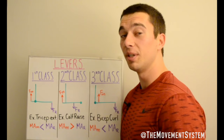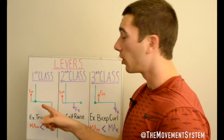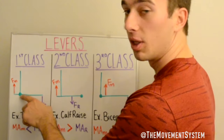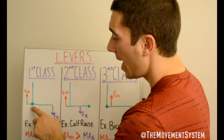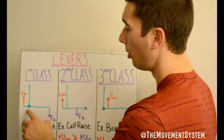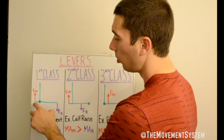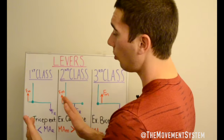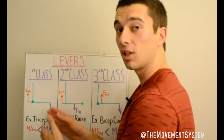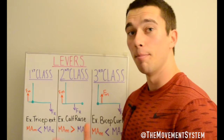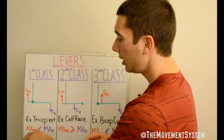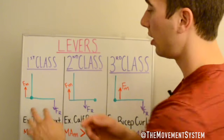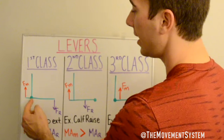Now let's talk about a first-class lever. An example is the tricep. The upper arm and forearm meet at the elbow, which is the fulcrum. The tricep inserts behind the elbow, so the muscle force is applied on the opposite side of the fulcrum from the resistance — that's what makes this a first-class lever. The tricep is one of the only examples of a first-class lever in the body. The moment arm of the muscle is still short — right next to the fulcrum — while the moment arm of the resistance is the full length of the forearm.